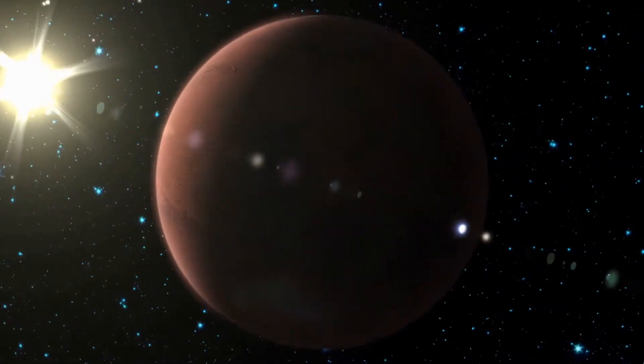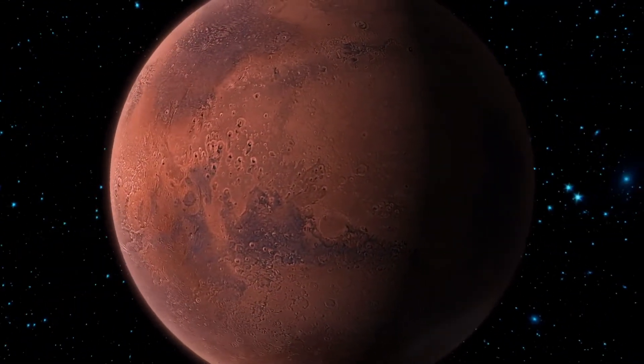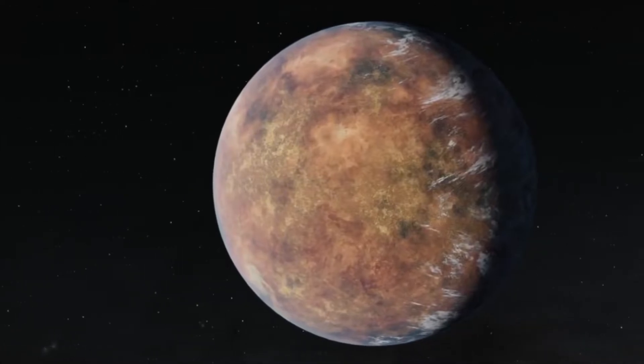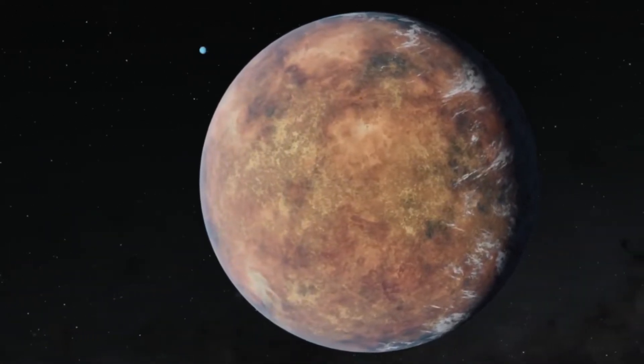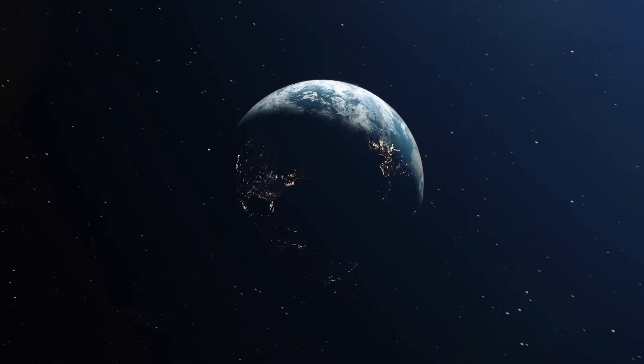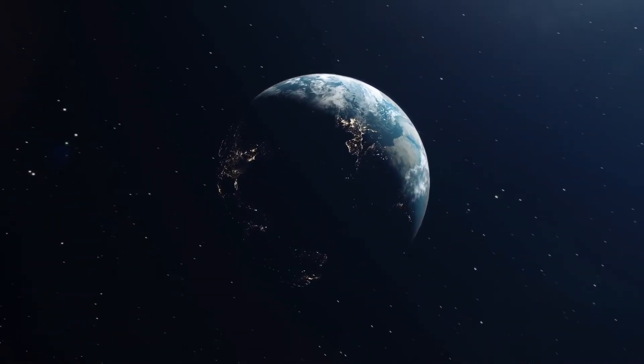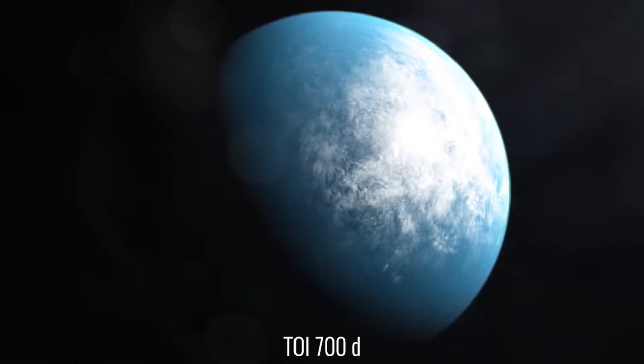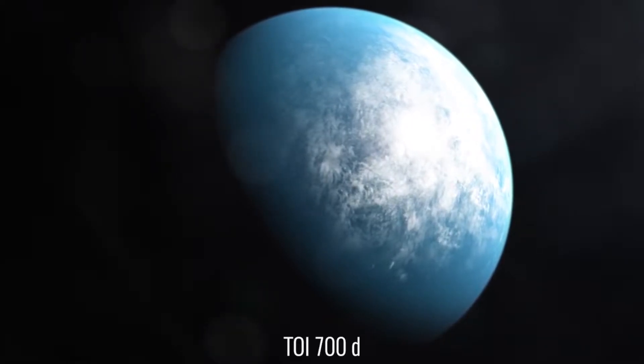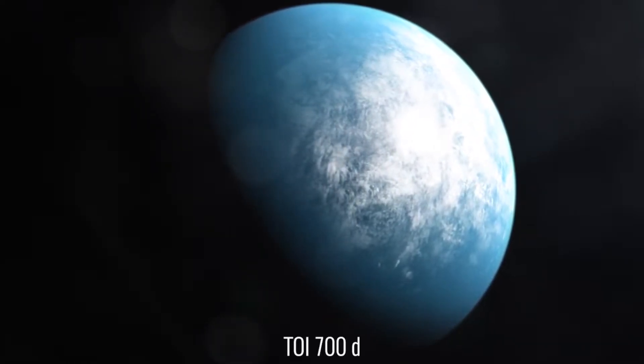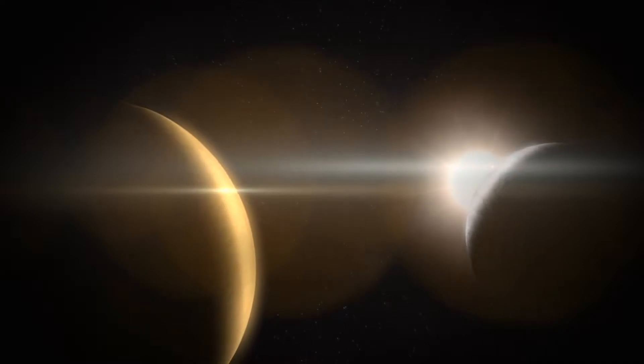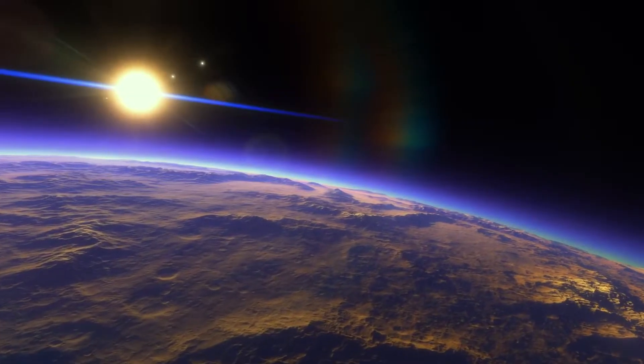TOI-700E is very close to its star and therefore orbits it quickly, in just 37.4 days, much shorter than our Earth year. This proximity to the star means it can have the right surface temperature for liquid water, which is very important for life. This planet's position in the habitable zone is exceptional because an atmosphere may maintain temperatures suitable for life.